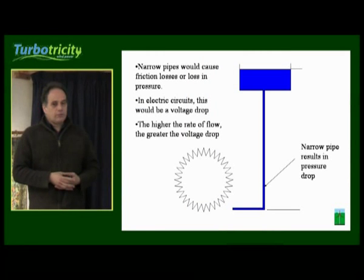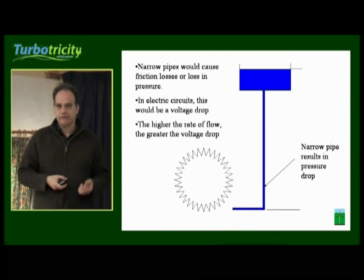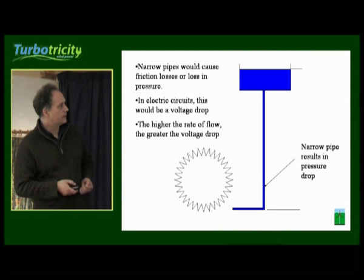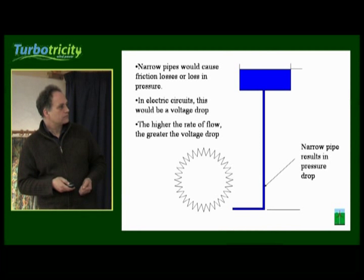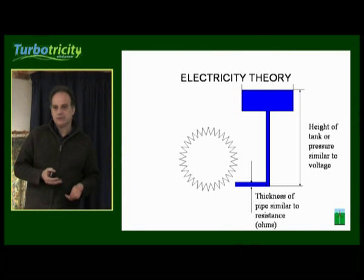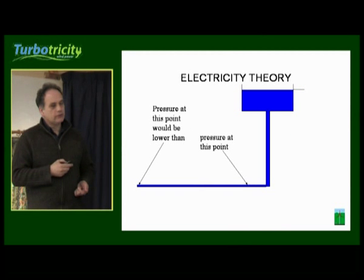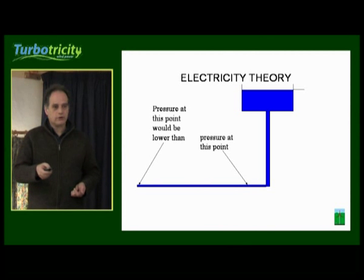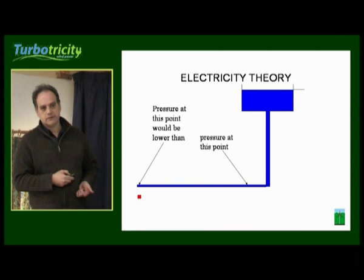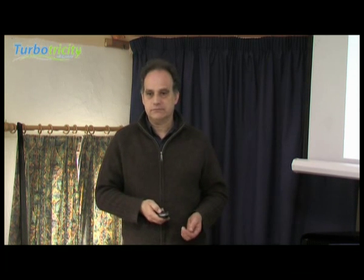If you have very narrow pipes, for example, there would be a friction loss in the flow of water. But similarly, if you have very light copper wire, you would get a voltage drop across the circuit. So the thickness of the pipe is similar to the resistance of your cable or wire. We're still looking at the height or the pressure being similar to the voltage. So if you had a flow of water running through a pipe, at the early stage of that pipe the pressure would be higher than further down the pipe — that would be a pressure drop along the pipe. Similarly, along the cable, you would get a voltage drop.